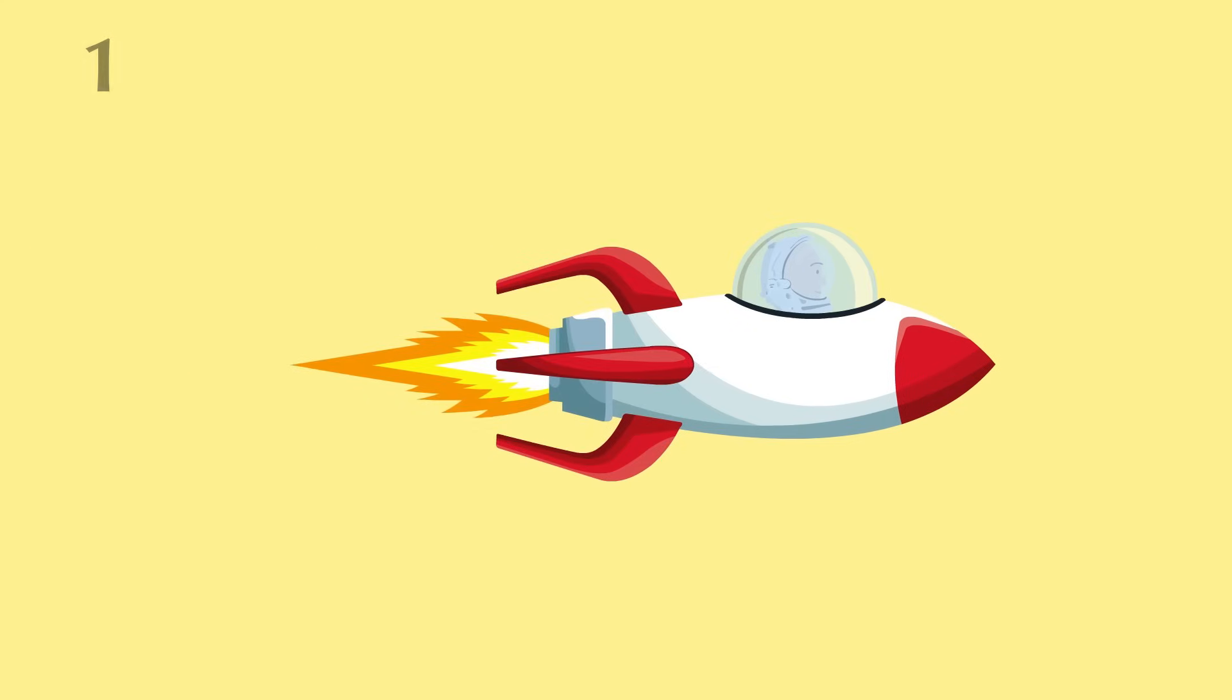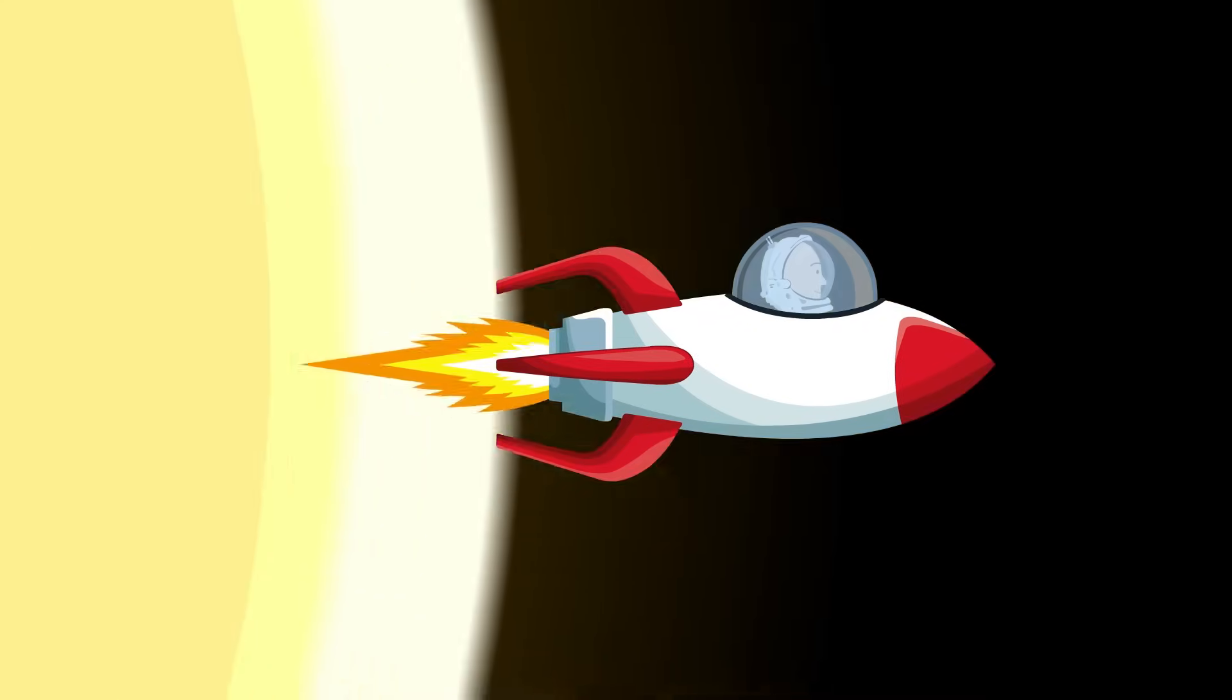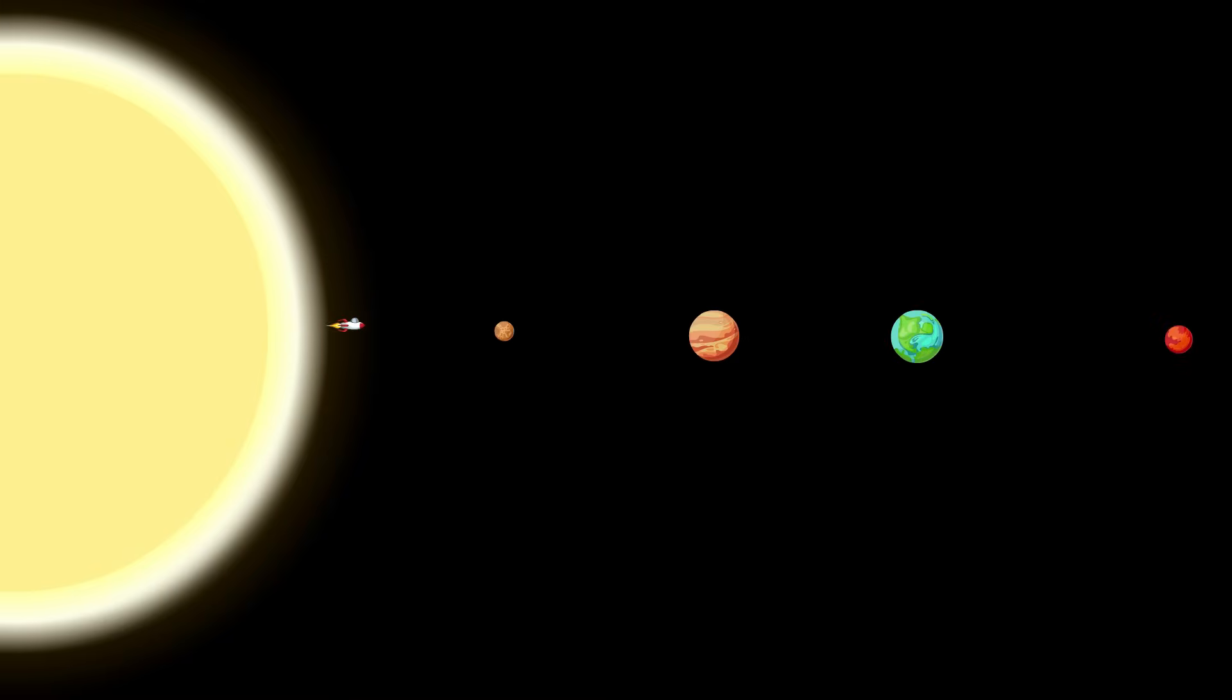Imagine that you're sitting in a spaceship that has just started its journey from the sun, and is moving outwards. You will see the inner planets first. They happen to be very close to the sun, so there's nothing extraordinarily dramatic about the distances between them. What is dramatic, however, is their minuscule size.